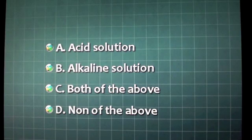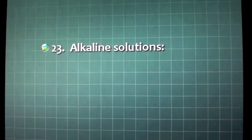pH from 0 to 7 indicates: A. Acid solution, B. Alkaline solution, C. Both of the above, D. None of the above.